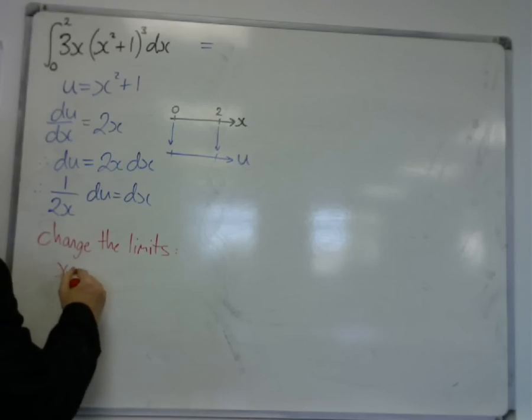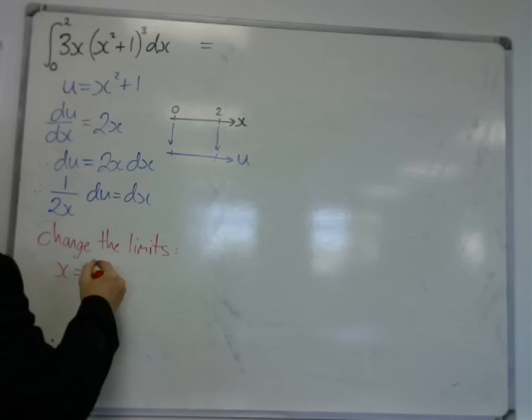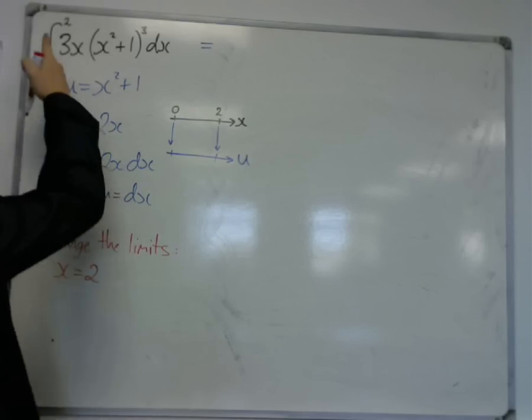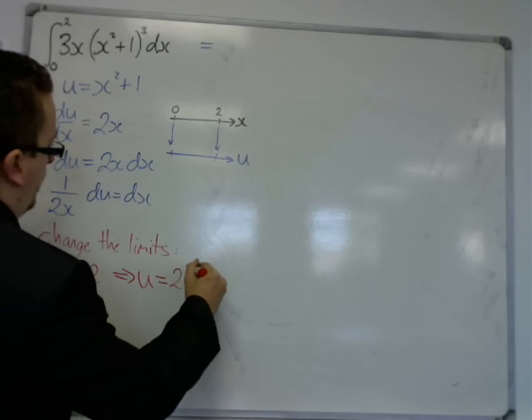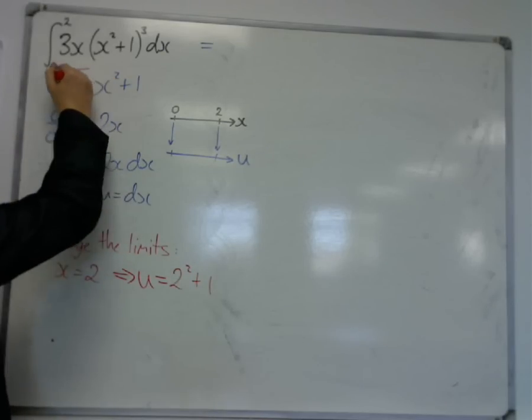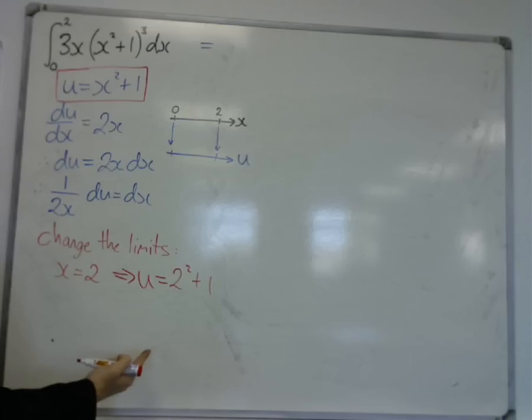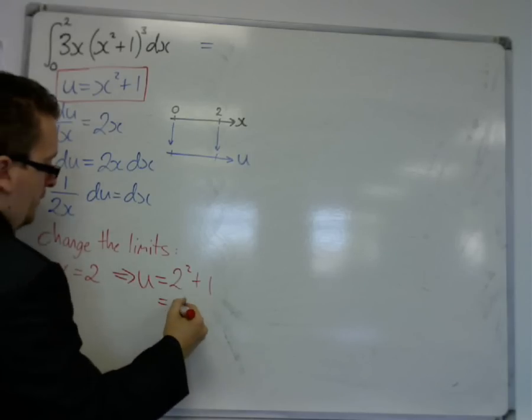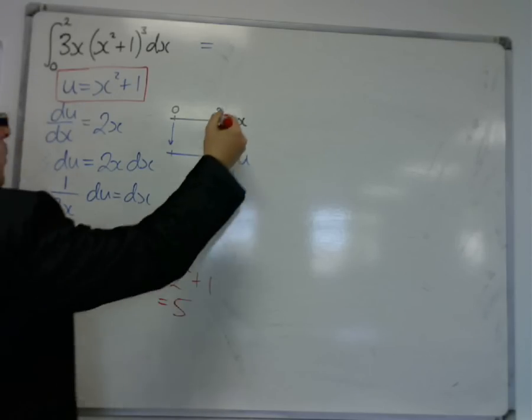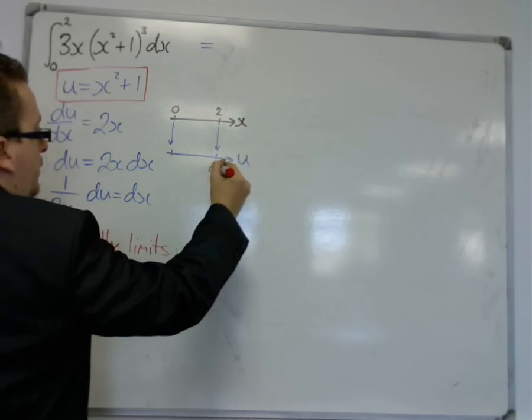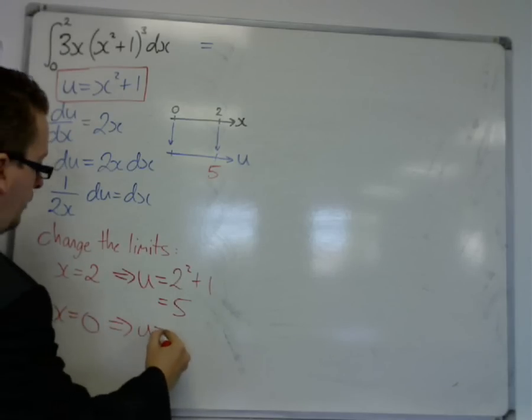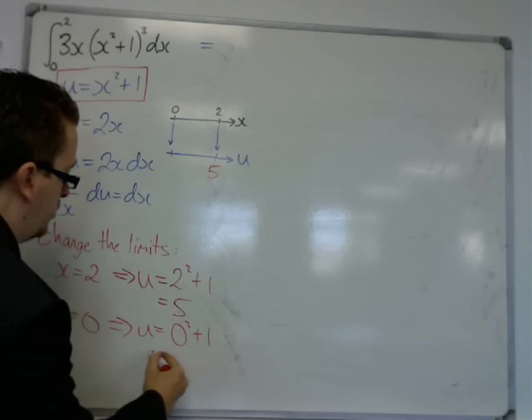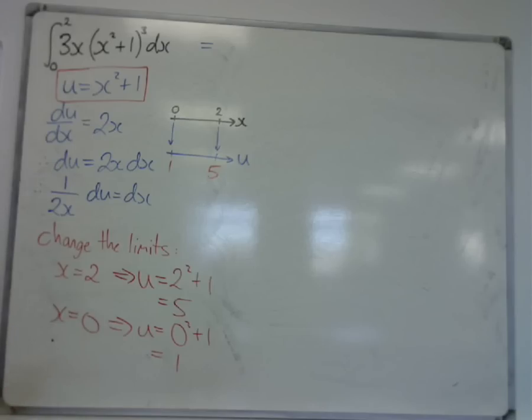So when x is 2, u is equal to 2 squared plus 1. Now, we use this substitution to substitute in 2. So u is equal to 5. So when x is 2, u is 5. And when x is 0, u is equal to 0 squared plus 3, which is 1. So, in actual fact, on the u-axis, we're integrating between 1 and 5.